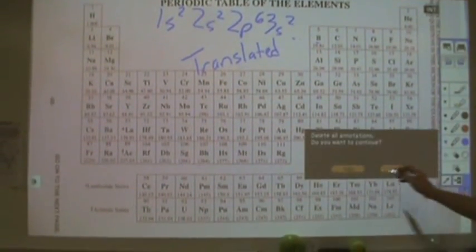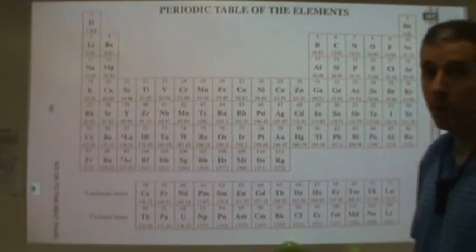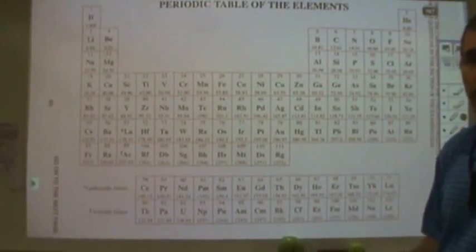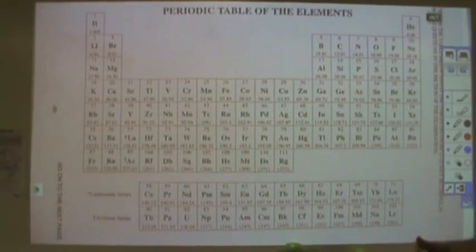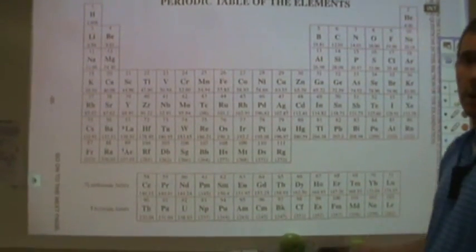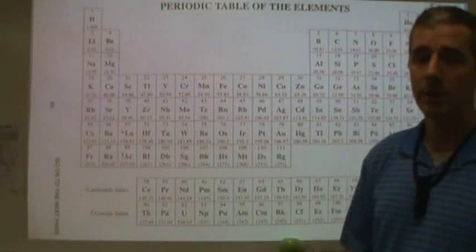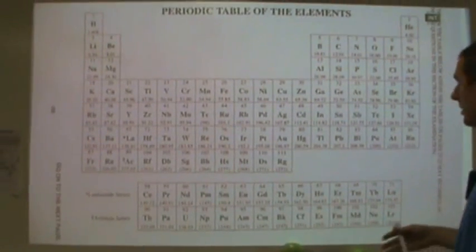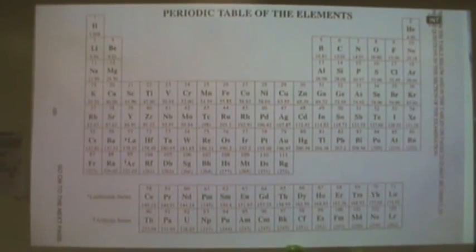Now there are many ways to do electron configurations. One of which is just to memorize the order of all the orbitals and how many there are of each. There's 1s, then 2s, then 2p, then 3s, then 3p, then 4s, then 3d, then 4p, then 5s, then 4d, then 5p, then 6s, then 4f, then 5d, then 6p. But if you don't want to do that, the periodic table has been arranged for you in a way that's highly convenient.